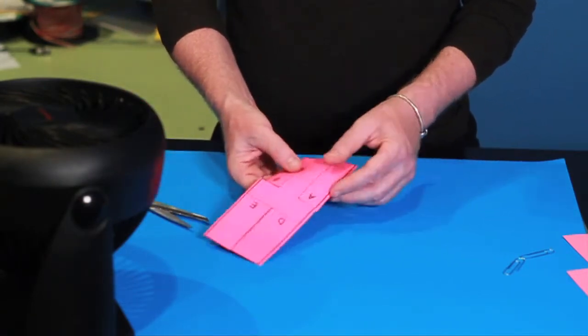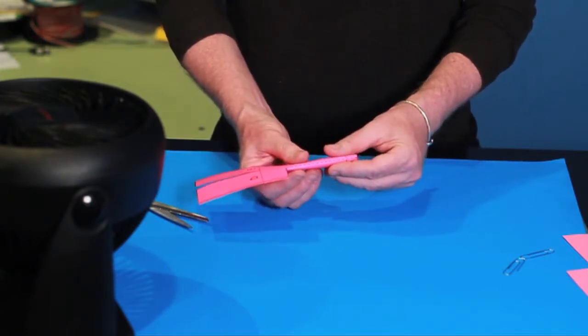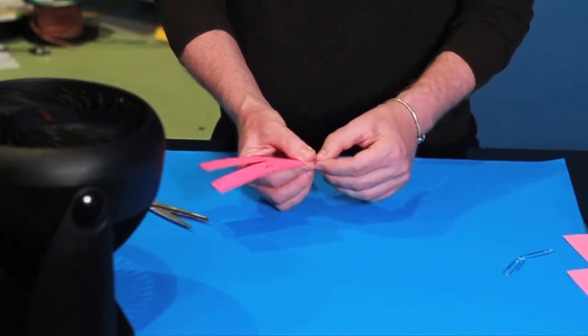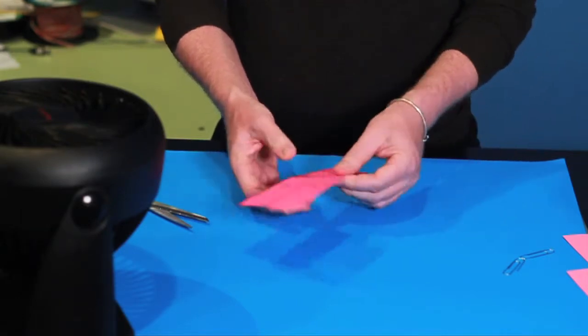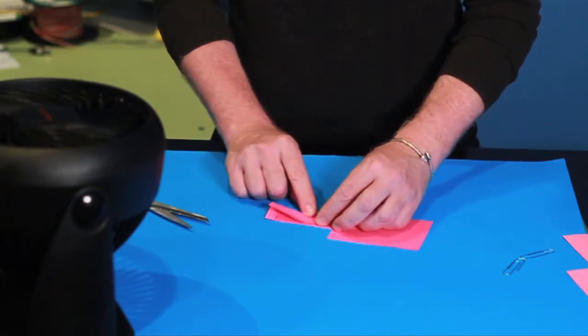So, the first thing you'll do with the folding is you'll take this A side, and you'll fold it like this. Then you'll turn it over, and you'll fold the other side, the B, over it.